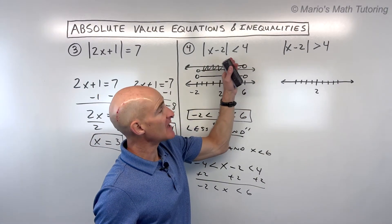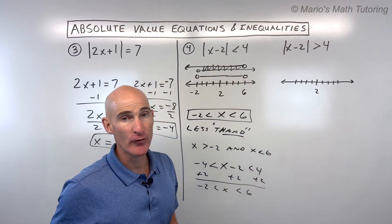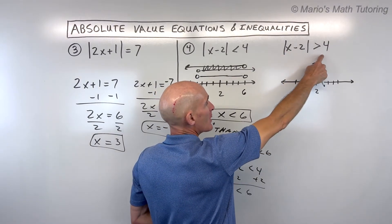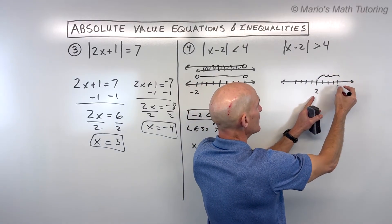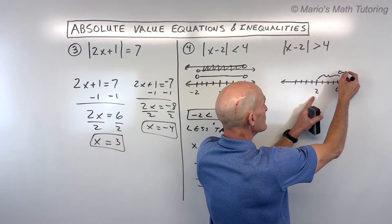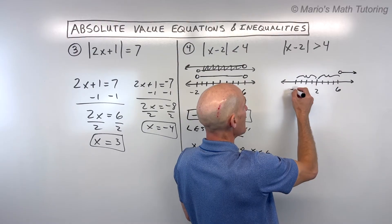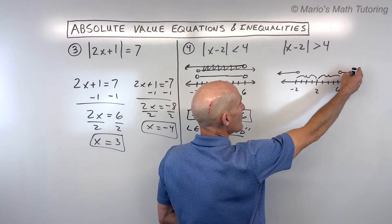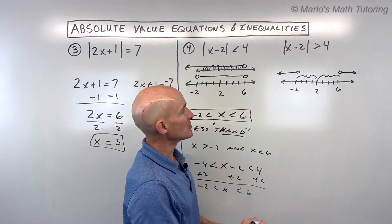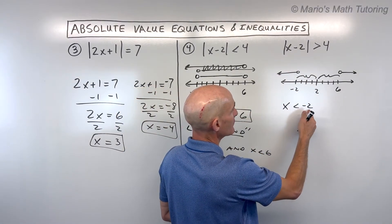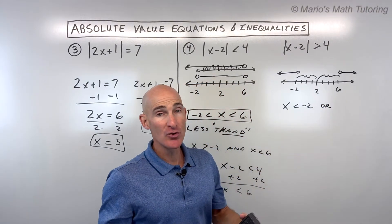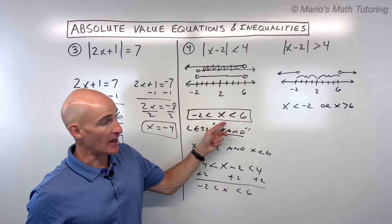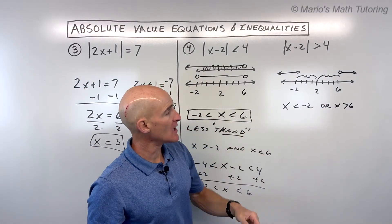Similarly, for |x − 2| > 4, the distance from some number and two is greater than four units. Four units to the right is six, four units further to the left is negative two. We have two separate regions: x is less than negative two or x is greater than six. You can't put these back together like the 'and' type — you must leave these as two separate inequalities joined by 'or'.